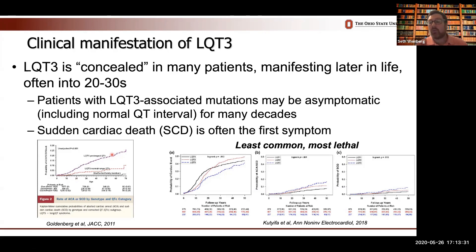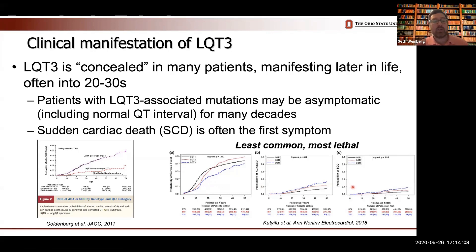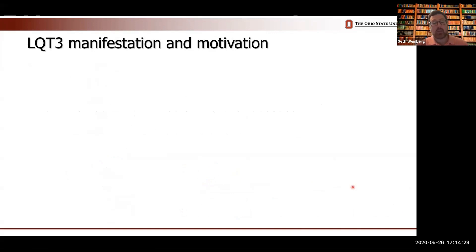Often sudden cardiac death is the first symptom that these patients exhibit. I'll often refer to this disorder as the least common but the most lethal. There are many different classes of long QT syndromes; long QT 1, 2, and 3 are the most common. Long QT 3 is actually the least likely to have any cardiac event, but it's the most lethal in terms of there being an aborted cardiac event or sudden cardiac death. It's a particularly challenging disorder in that you may not know you have symptoms, but when you do, it's often a very lethal symptom.